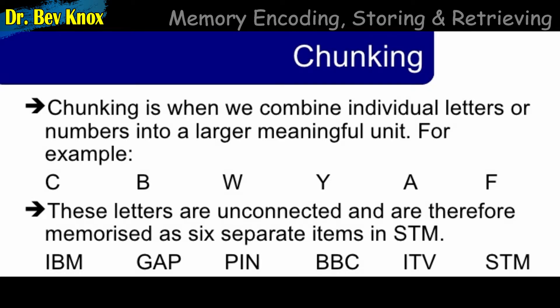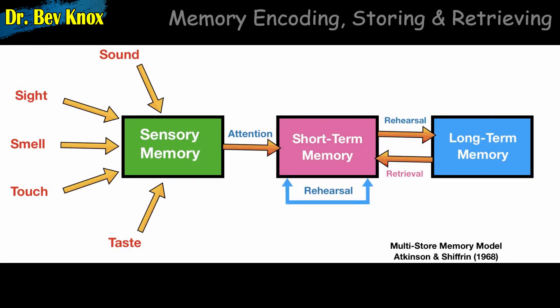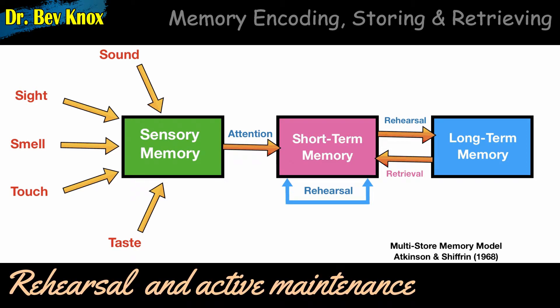A chunk can be individual letters or numbers, permitting us to hold a seven-digit phone number, but a chunk may also consist of larger categories, such as words or other meaningful units. The transfer of material from short-term memory proceeds largely on the basis of rehearsal — the repetition of information that has entered short-term memory. Rehearsal accomplishes two things: first, as long as the information is repeated, it is maintained in short-term memory; and more importantly, rehearsal allows us to transfer the information into long-term memory.